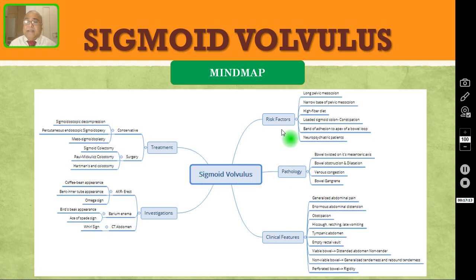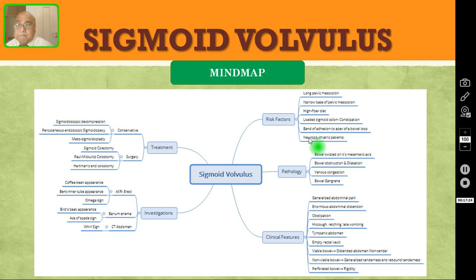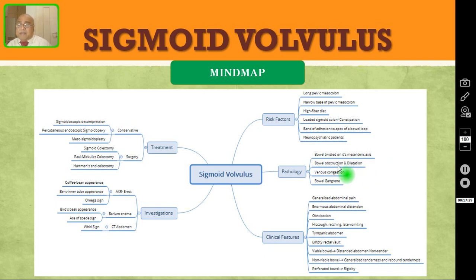Sigmoid volvulus — mind map summary. Risk factors: long pelvic mesocolon, narrow base of the pelvic mesocolon, high fiber diet, loaded sigmoid colon due to constipation, band of adhesion at the apex of the bowel loop, and neuropsychiatric patients. Pathology: the bowel is twisted on its mesenteric axis, bowel obstruction is present and the bowel is dilated, then it will go for venous gangrene, and eventually the bowel will go for gangrene, perforation, and peritonitis.